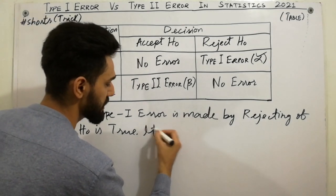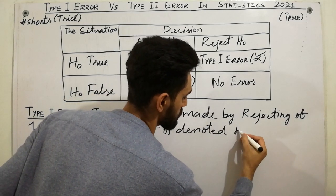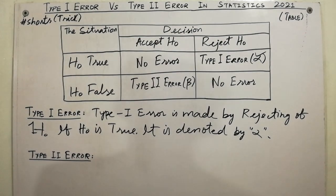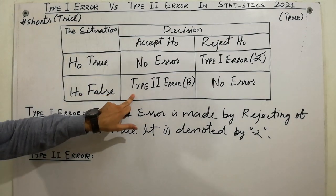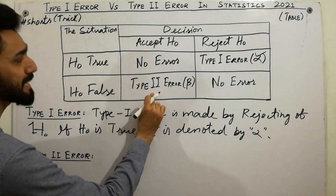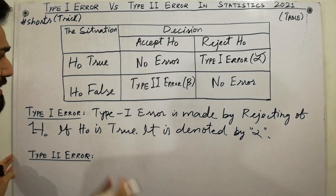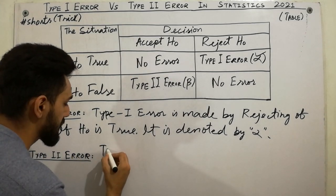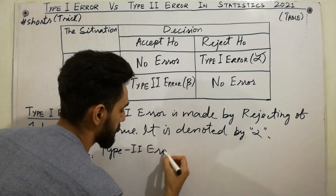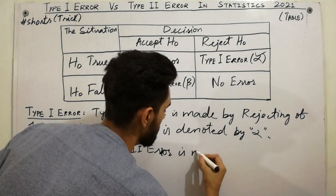And now last point is here, what is Type II error? You can write similarly. Before, Type II error is made by acceptance of H₀ if H₀ is false. Very simply write the definitions. Type II error is made by.